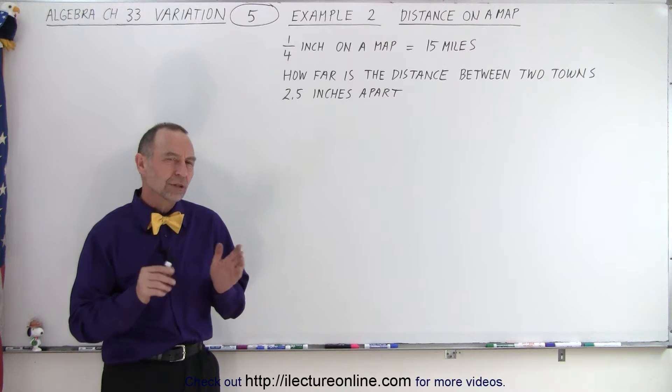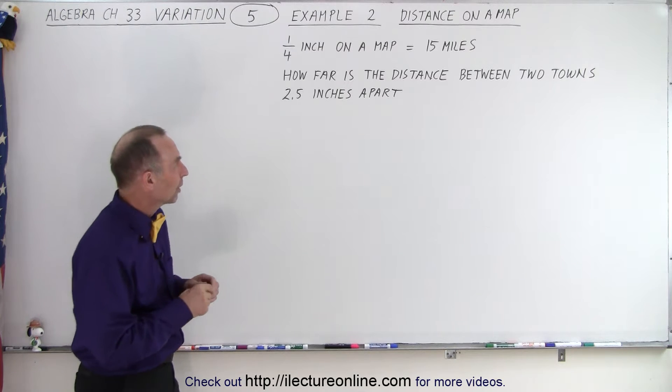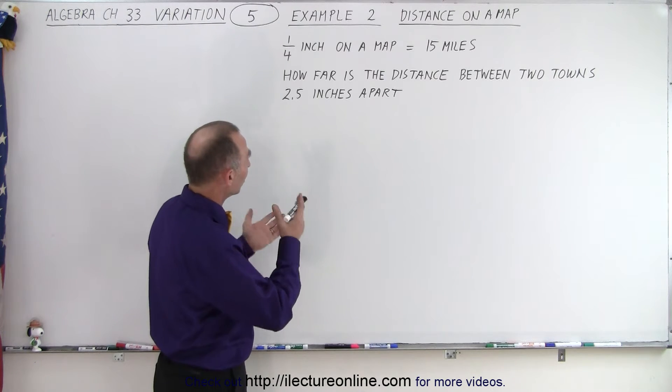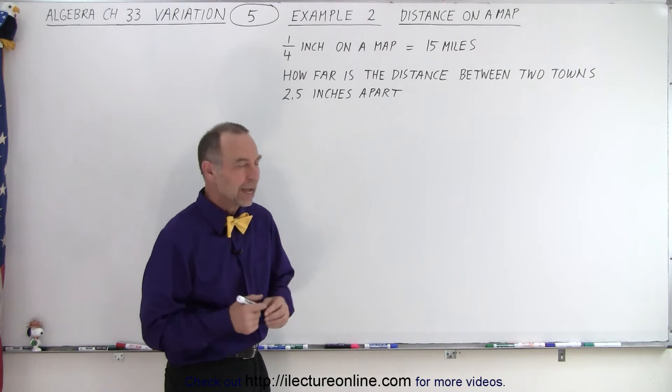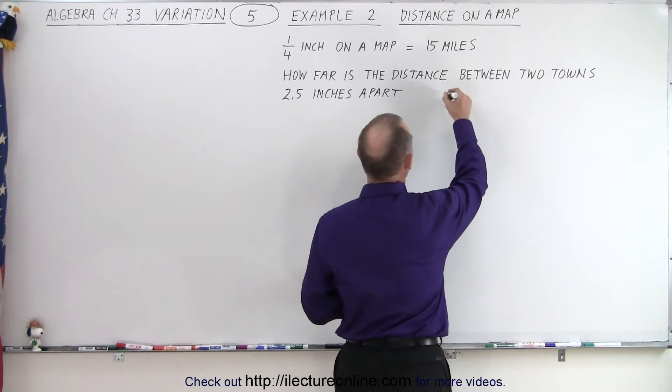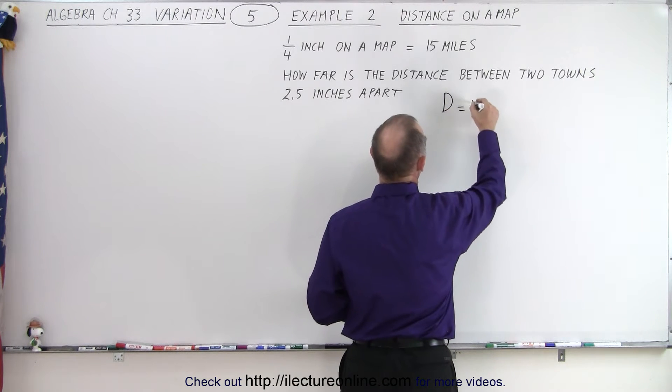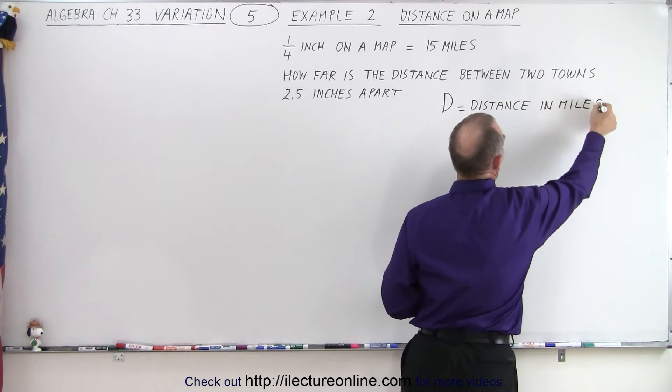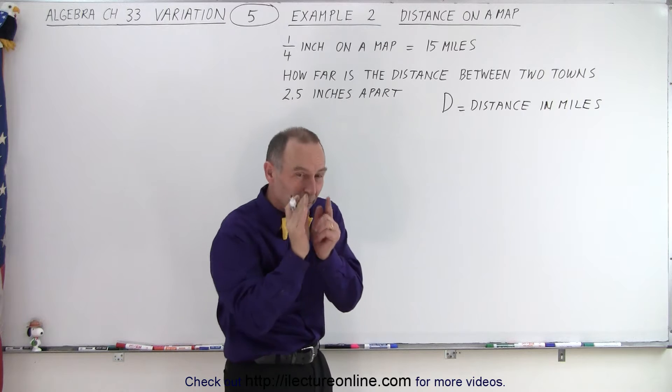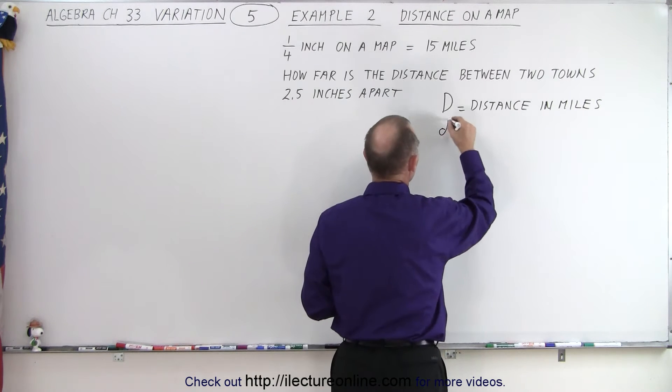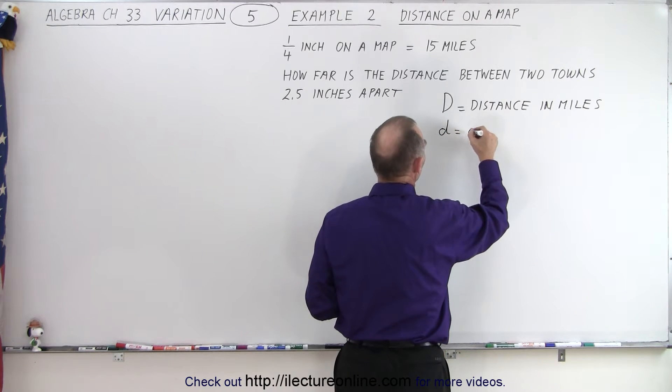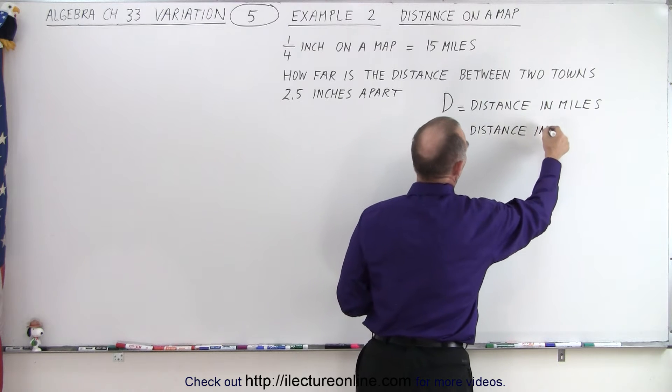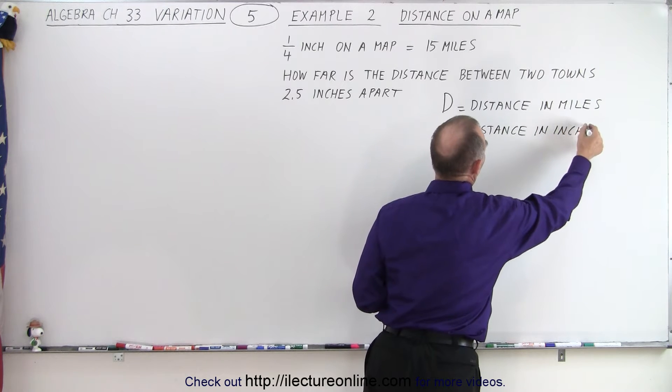So again, there's a variation technique here we can use. First of all, let's come up with some variables. Instead of using y and x, maybe we can use capital D as the distance in miles between the towns, and then we'll use little d to represent the distance on the map in inches.